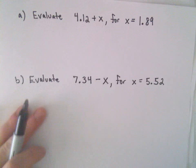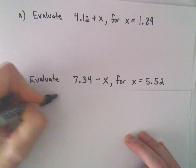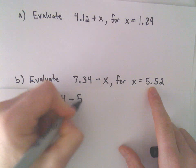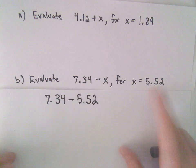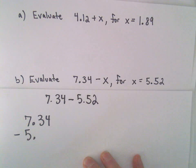So let's see part b here, we'll do just a little subtraction. It's going to be 7.34 minus x. So we're substituting in 5.52, so let's see 7.34 minus 5.52.